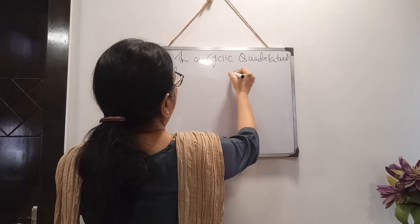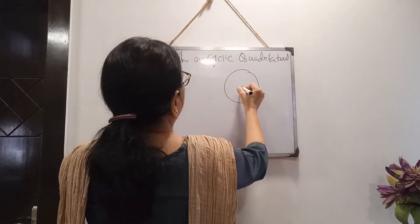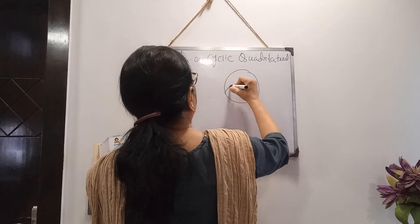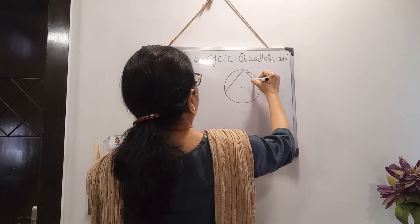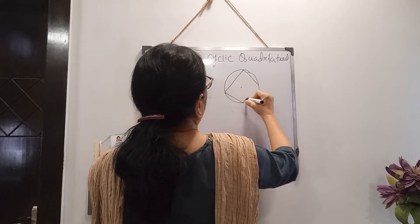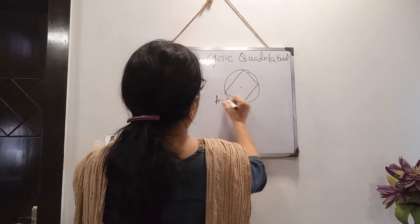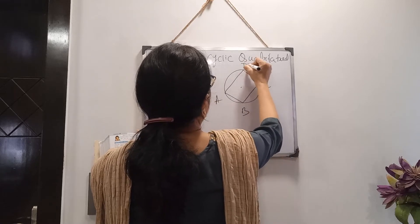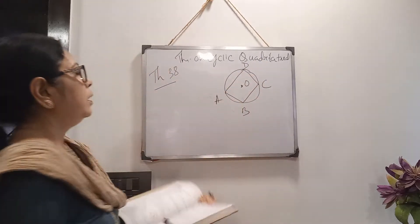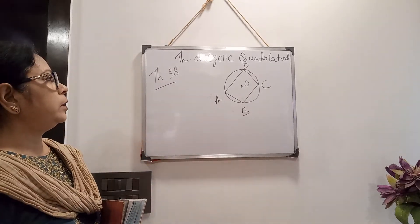First I am drawing the cyclic quadrilateral. It is cyclic and this is the center. I am giving the same names: A, B, C, D, and O is the center. So ABCD is a cyclic quadrilateral with center O.